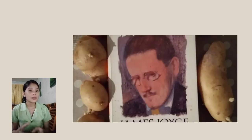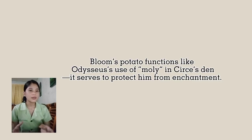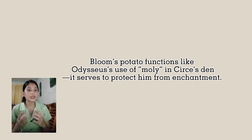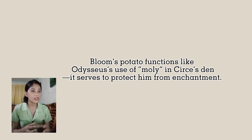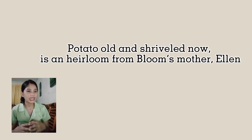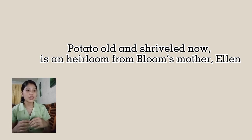The last symbol is Bloom's potato talisman. In episode 15, Bloom's potato, functioning as Odysseus's use of moly in Circe's episode, serves to protect him from enchantment — enchantments to which Bloom succumbs when he briefly gives it over to Zoe Hitchens. The potato, old and shriveled now, is an heirloom from Bloom's mother Ellen. As an organic product that is both fruit and root, it gestures towards anxieties about fertility and his family line. Most important, however, is the potato's connection to Ireland — Bloom's potato talisman stands for his frequently overlooked maternal Irish heritage. Thank you so much for listening and I hope you have learned something from my lesson. See you again next time; this is Jella. Good night, everybody.